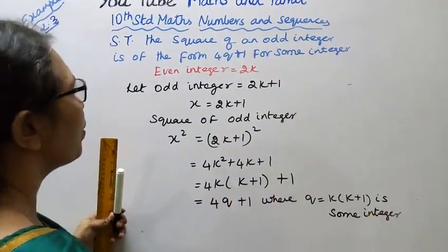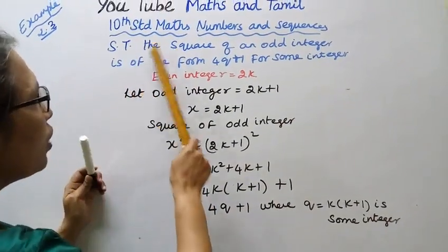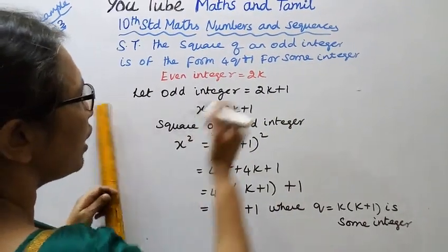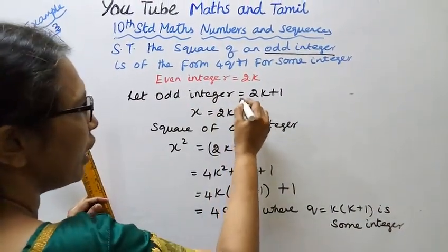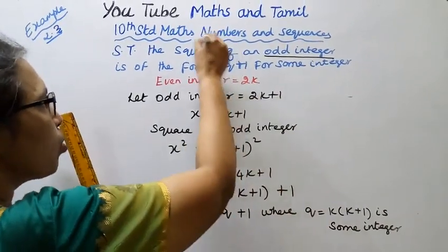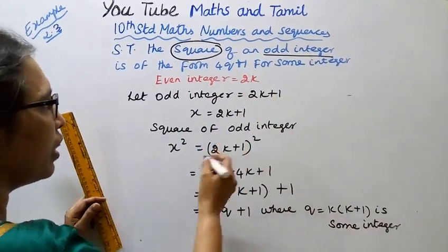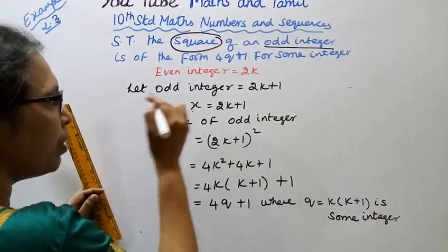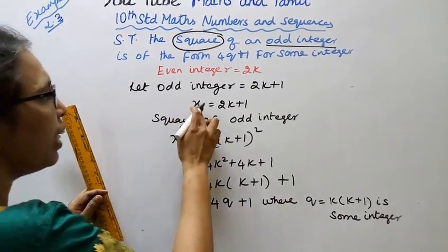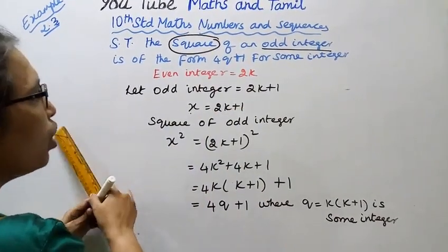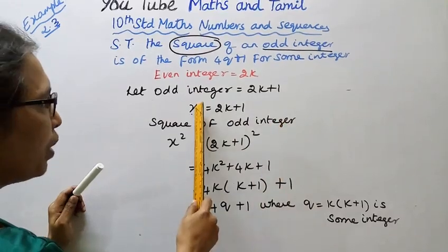Now show that the square of odd integer is 2K plus 1. Square of odd integer. Now the odd integer is x equal to 2K plus 1.